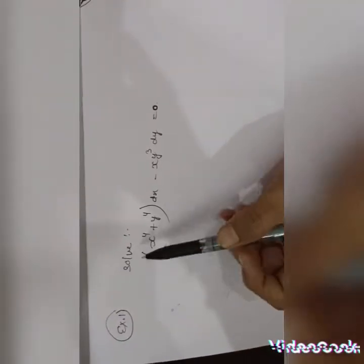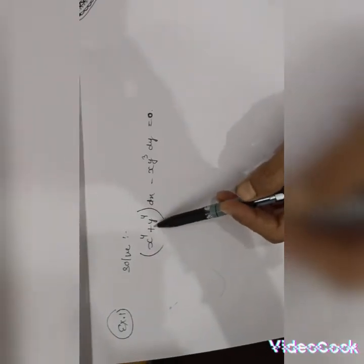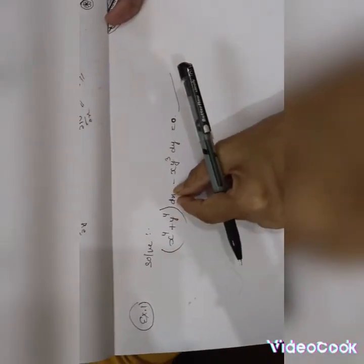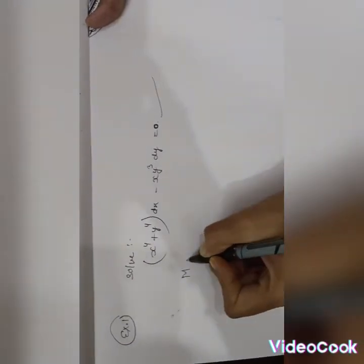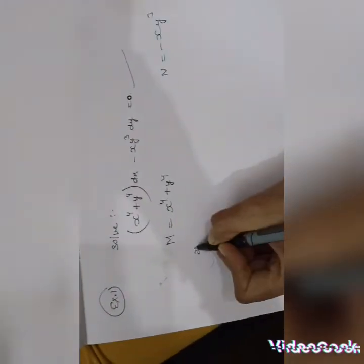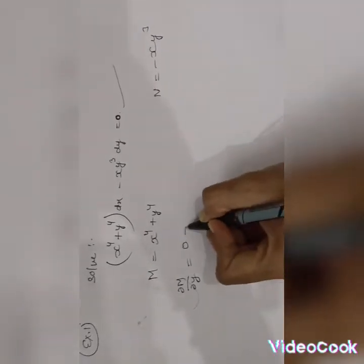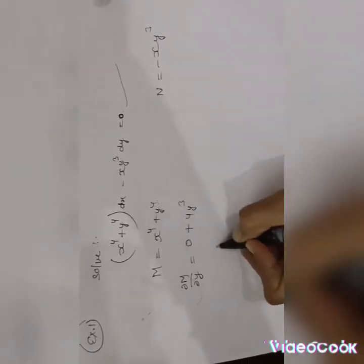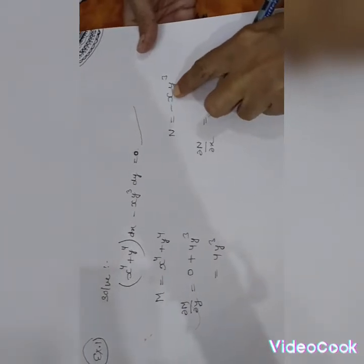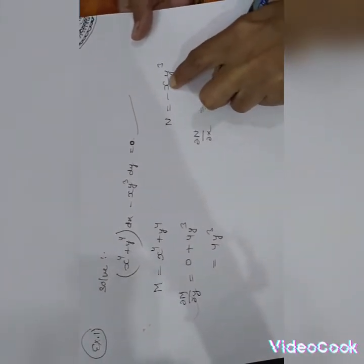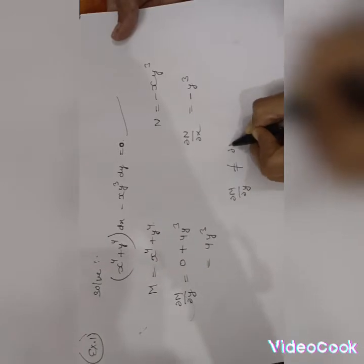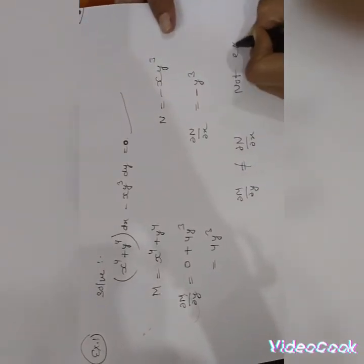For the equation (x⁴ + y⁴) dx – x·y³ dy = 0, we identify M = x⁴ + y⁴ and N = –x·y³. Computing ∂M/∂y: derivative of x⁴ is 0, derivative of y⁴ is 4y³. Computing ∂N/∂x with y as constant: derivative of –x·y³ is –y³. Since ∂M/∂y = 4y³ ≠ –y³ = ∂N/∂x, it is not an exact differential equation.